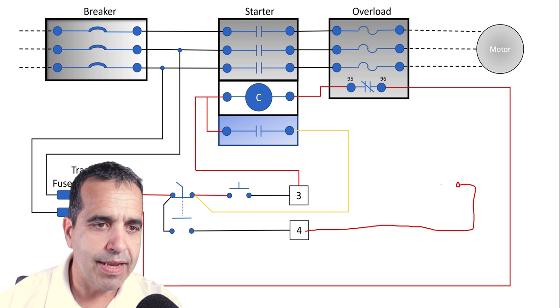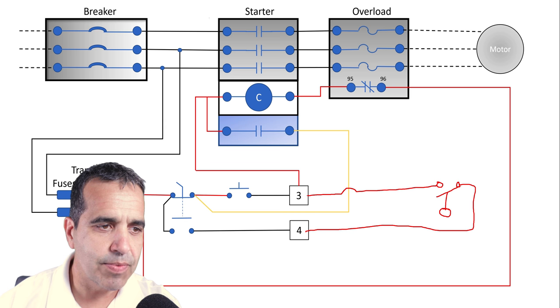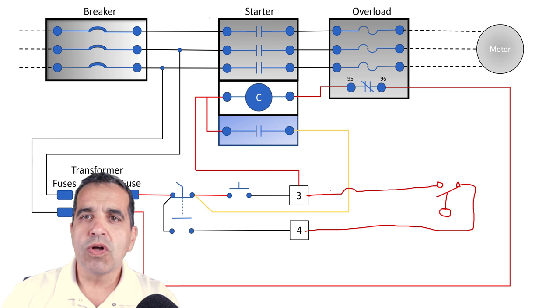We would connect it to, say, a float switch. Imagine this is a float switch, a close-on-rise float switch. Here's our float—when the water rises, the float closes. We attach another wire, come back, and jump over to number three. When that float closes, our pump would run.